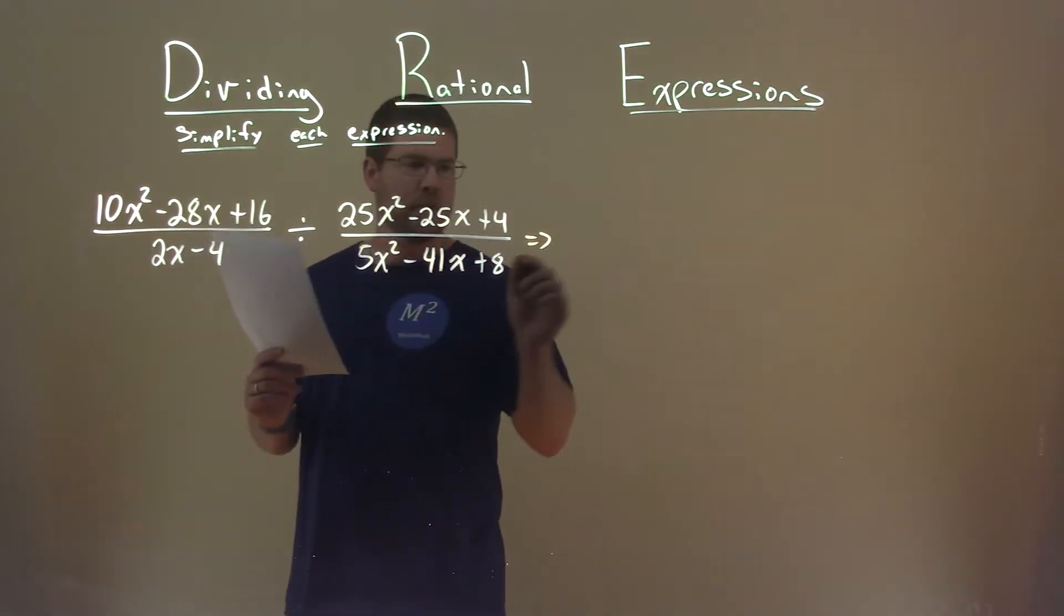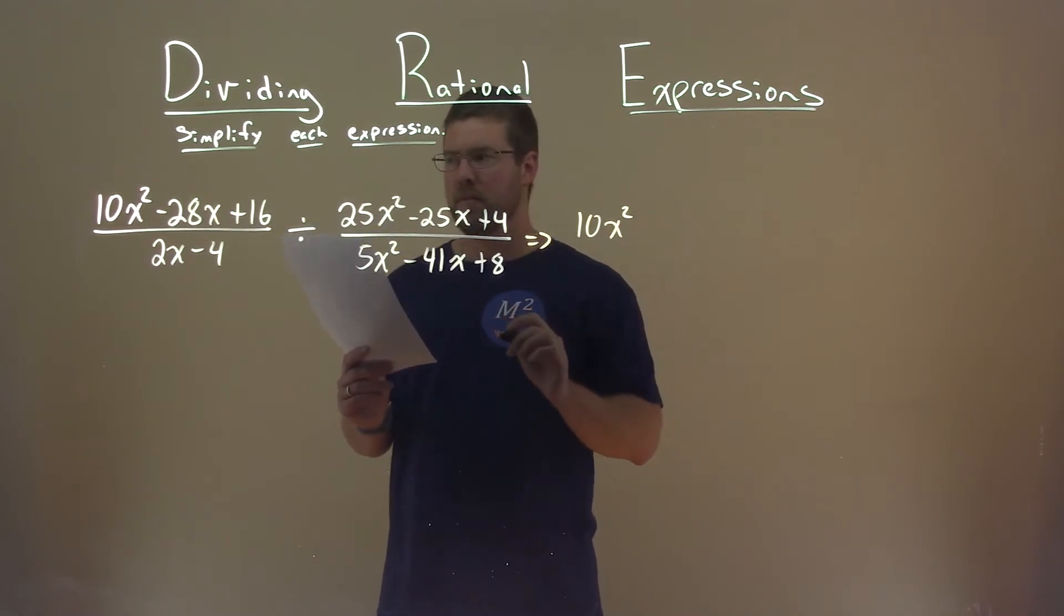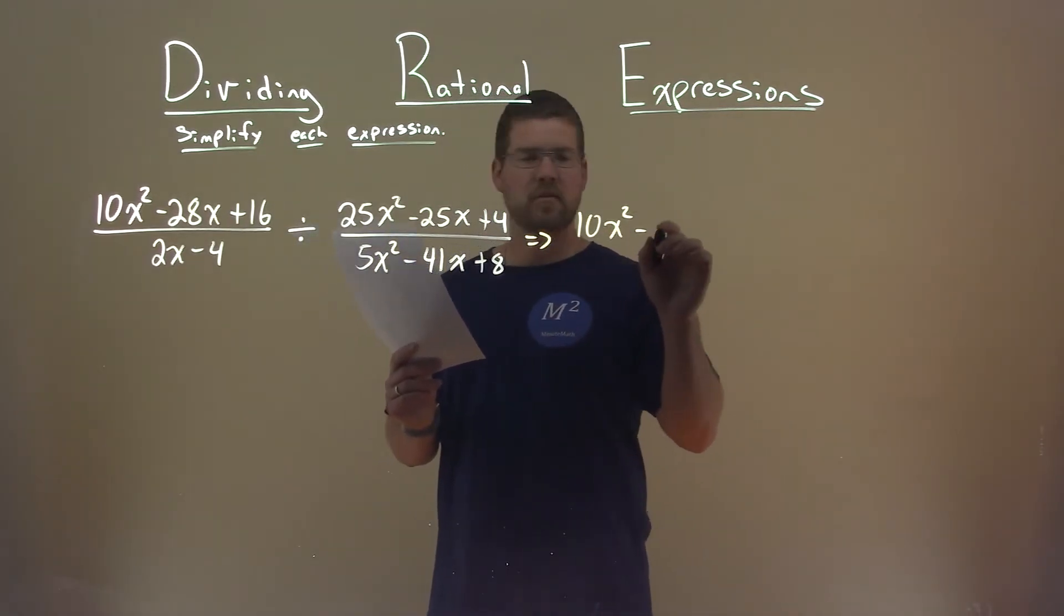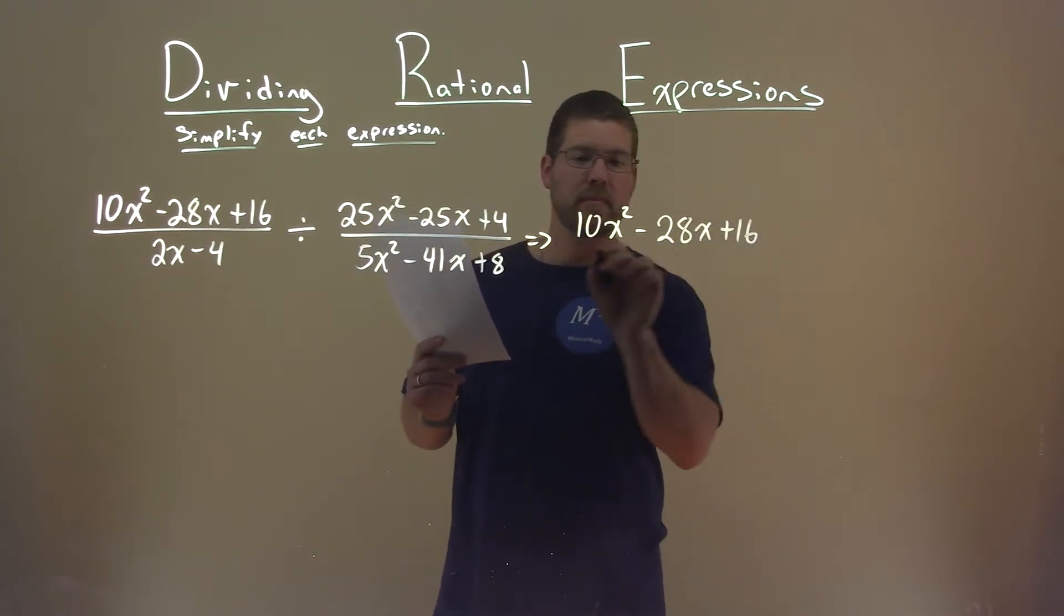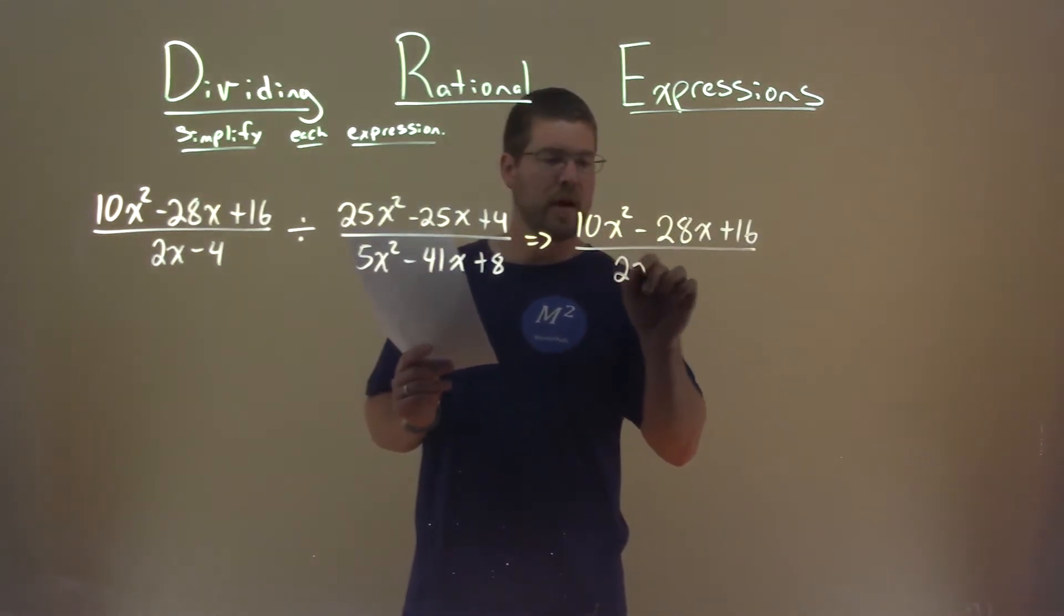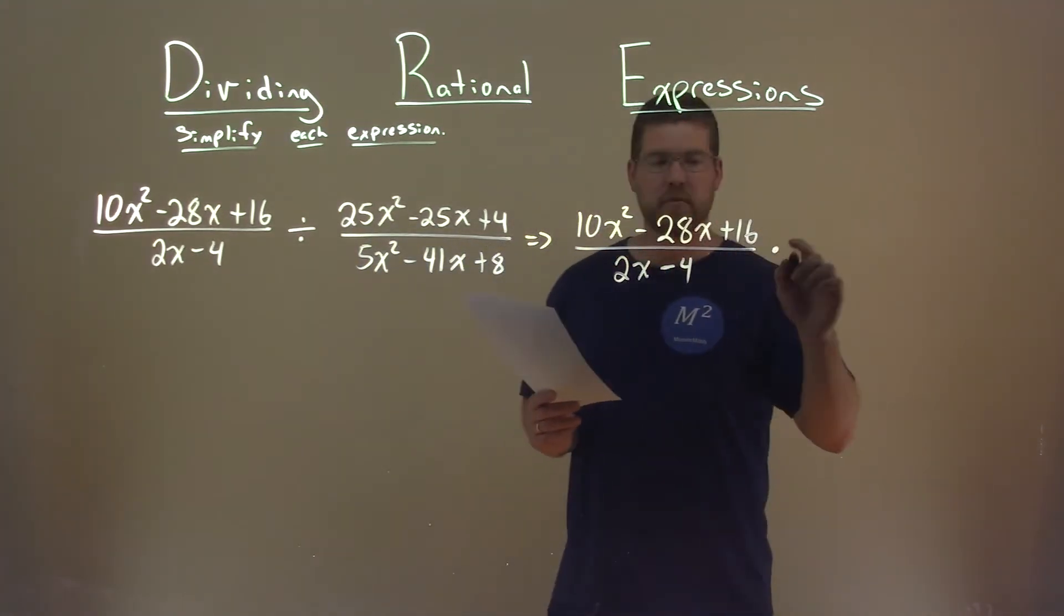Well, I'm going to rewrite this really big thing, and instead of division, it'll be multiplication. So the first half is still the same, 10x squared minus 28x plus 16 over 2x minus 4, and instead of dividing, we're multiplying, and we're flipping the second fraction.